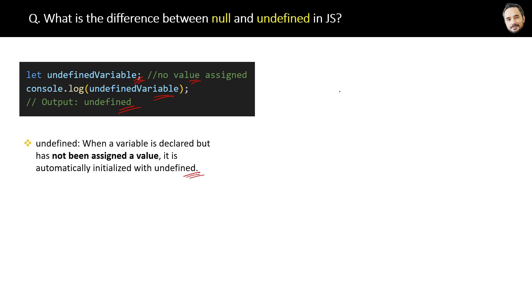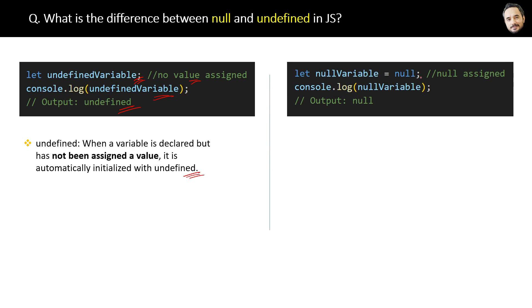On the other hand, here is the code for the null. Here we are declaring the variable and assigning the null value to it. And then we are logging the null variable and output is as expected null. No surprises. The definition of null is, null variables are intentionally assigned a null value.